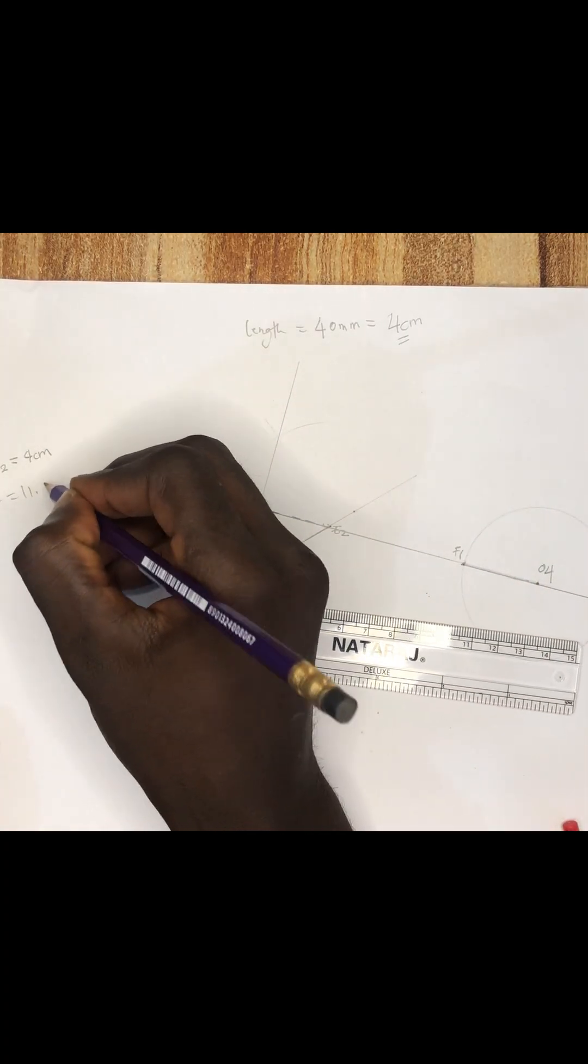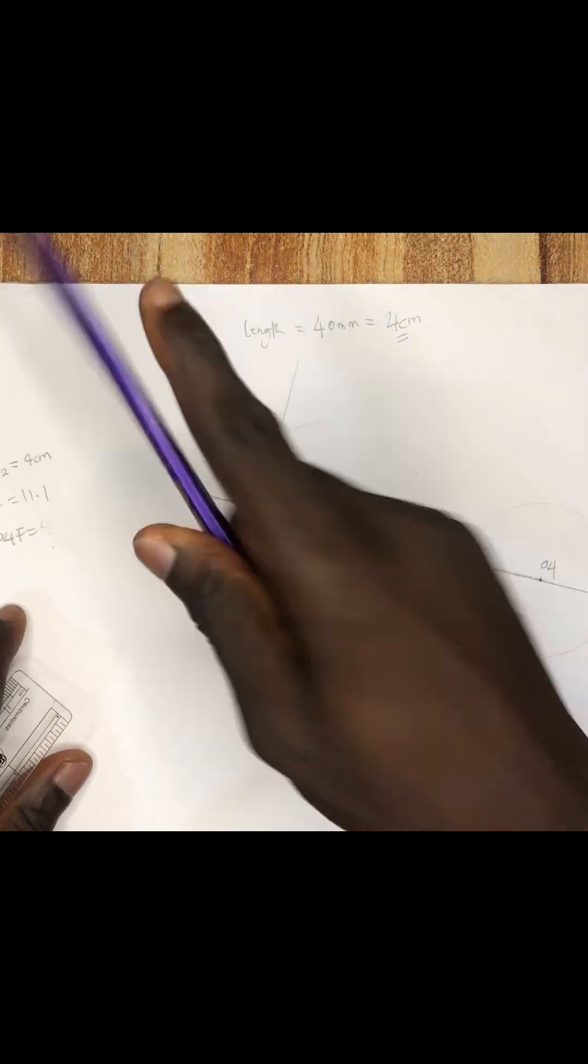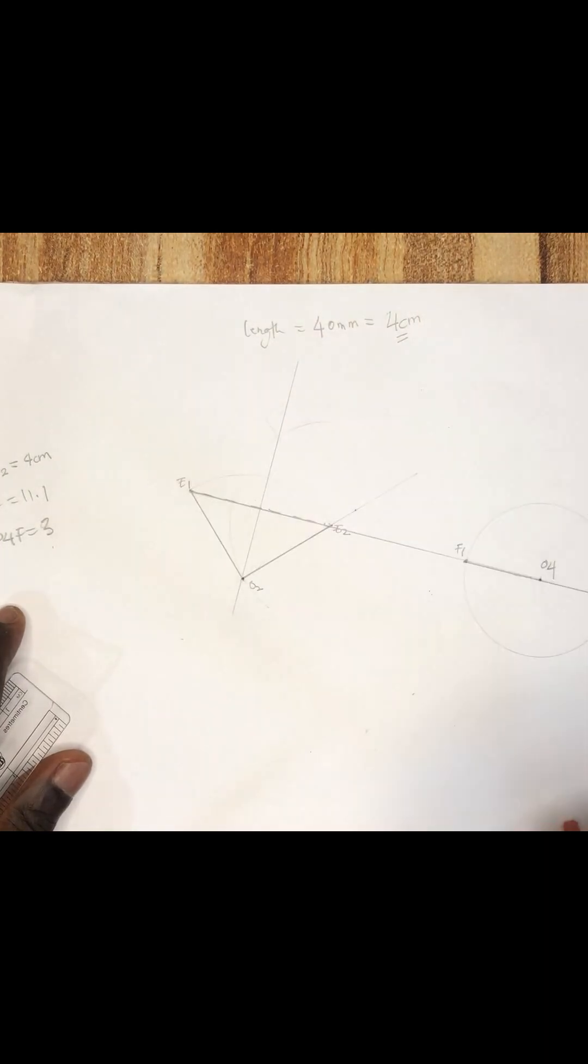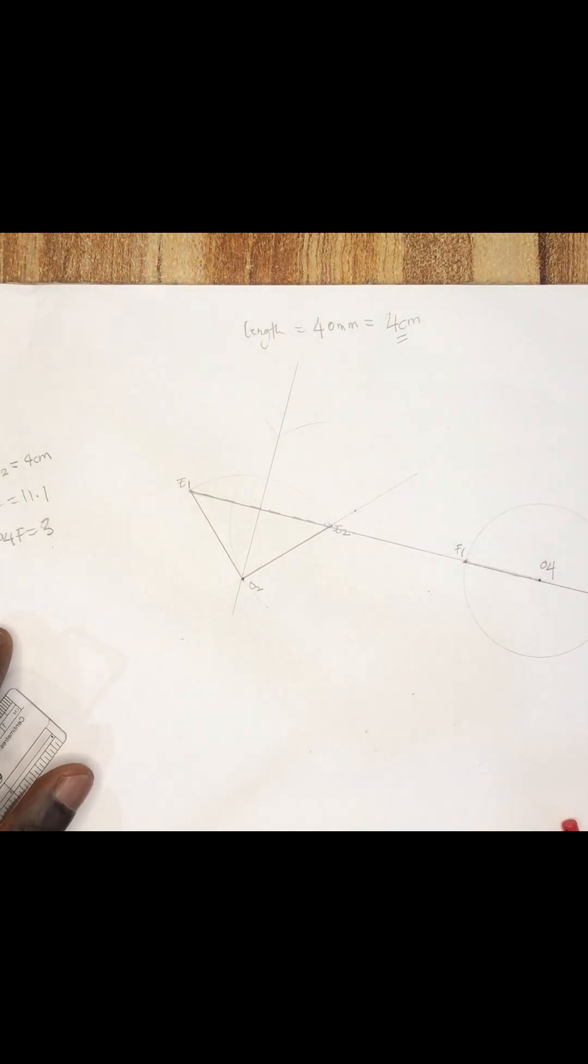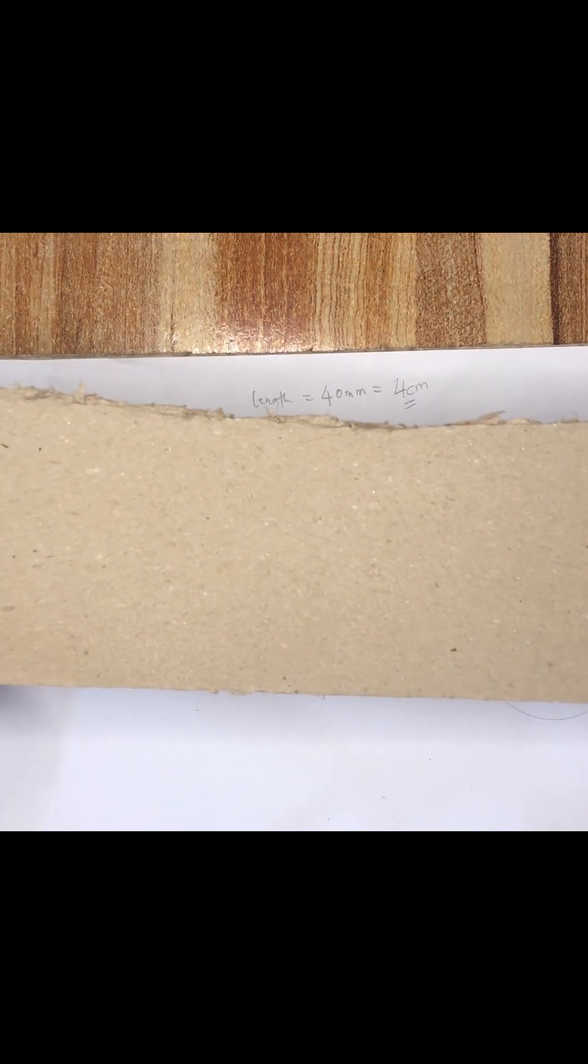So EF is 11.1 and then the crank is 3 centimeters. So 3 cm, okay. So I'm going to cut strips from the cardboard. I want to cut straight from the cardboard.